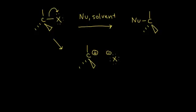In the next step, your nucleophile comes along. We can give it a lone pair of electrons and make it negatively charged — though it doesn't have to be negatively charged. This nucleophile is going to attack the electrophile, which is your carbocation. Nucleophile and electrophile — opposite charges attract. This lone pair of electrons is going to form a bond with this carbon, and that gives us our product where the nucleophile has substituted for the halogen.